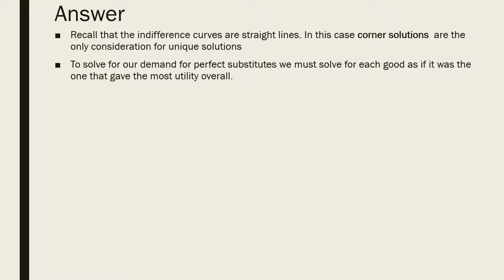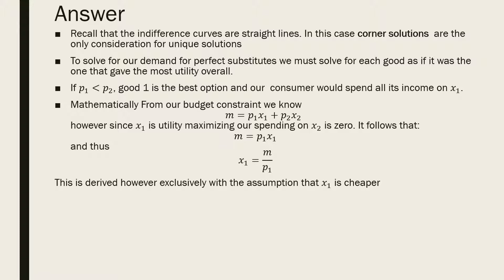To solve for our demands for perfect substitutes, we must solve for each good as if it were the one that yielded the most utility overall. If p1 is less than p2, in this case good one is our best option and our consumer would spend all of its income on x1.